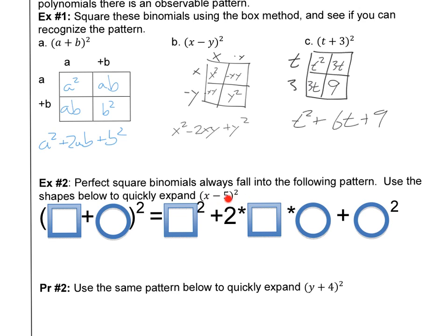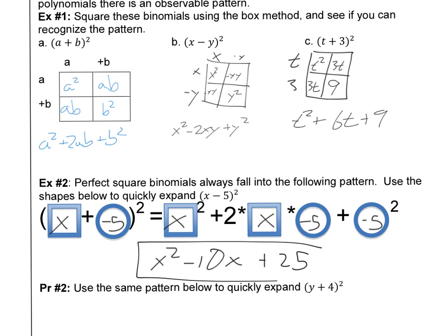Let's use that pattern now to expand x minus 5 squared. That's the same as x plus negative 5. So applying the pattern: the first term is x, the last term is negative 5. We get x squared, then 2 times negative 5 is negative 10 so we write negative 10x, and negative 5 squared is positive 25. That follows the pattern: first term squared, two terms multiplied together times 2, last term squared.